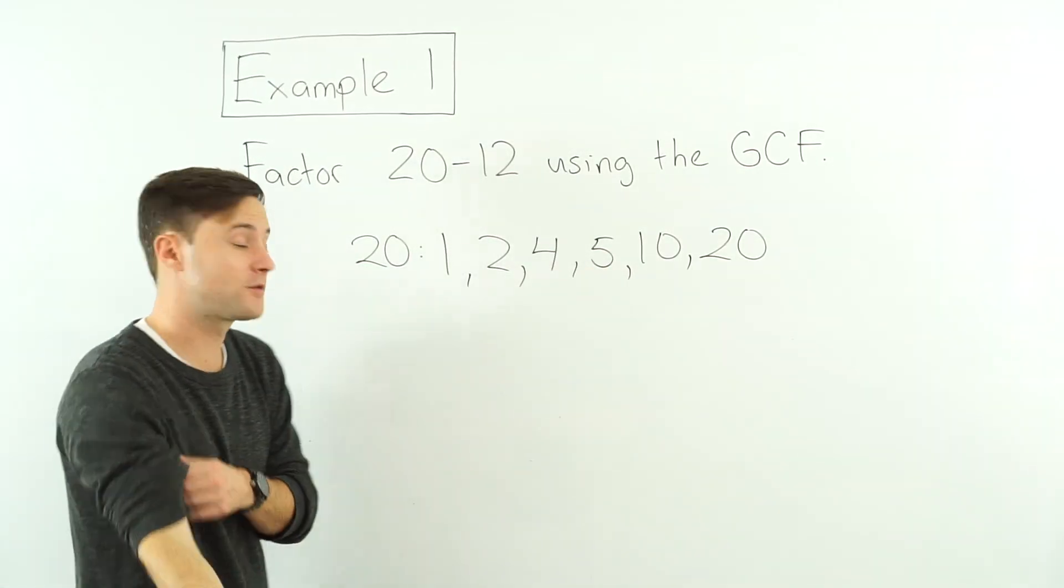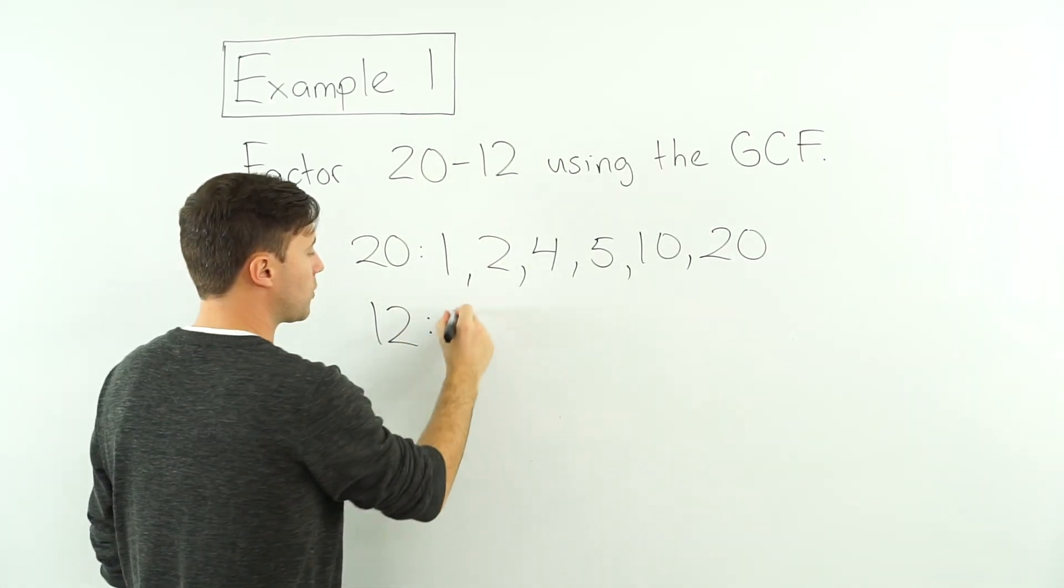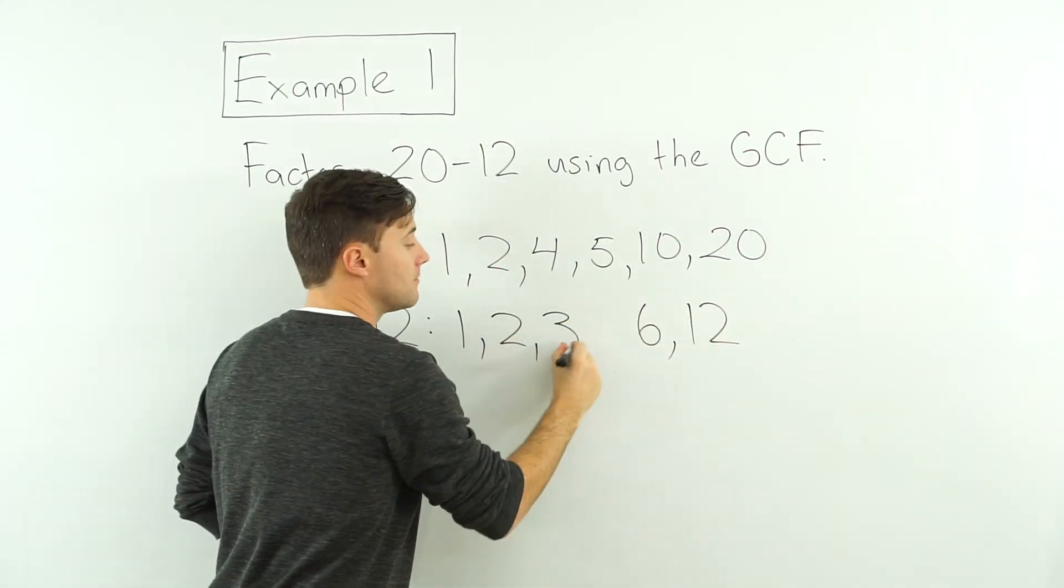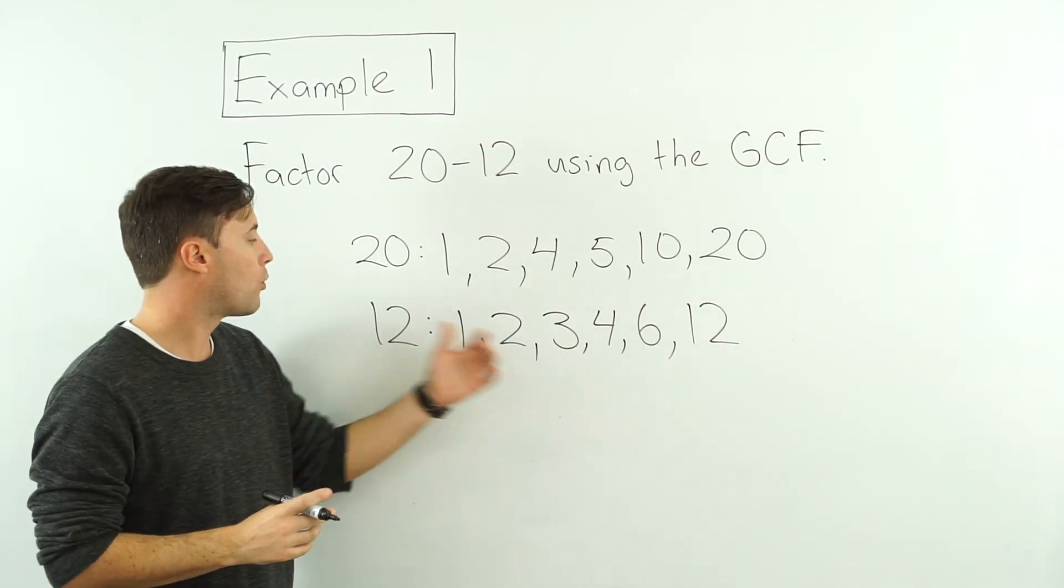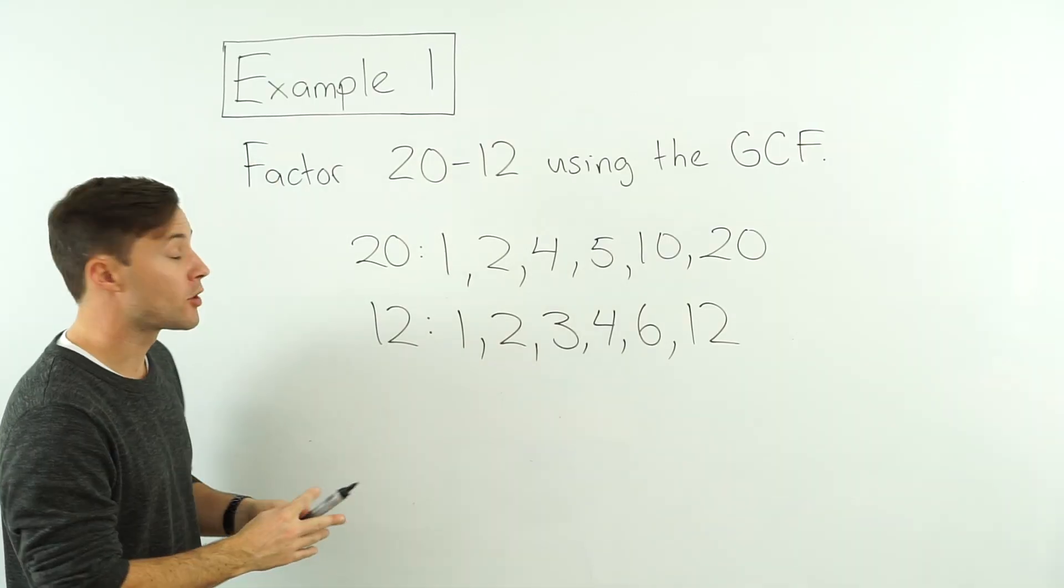Alright, how about the factors of 12? Well, for 12, same thing: 1 times 12, 2 times 6 works, 3 times 4. So those are the factors of 12. What can 12 be divided by evenly?